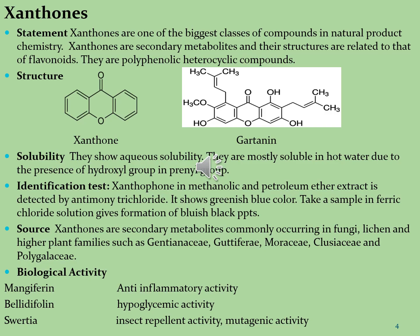Xanthones in methanolic and petroleum ether extract are detected by antimony trichloride — it shows a greenish-blue color. Taking a sample in ferric chloride solution gives formation of bluish-black precipitates, which indicates the presence of xanthone phytoconstituents.